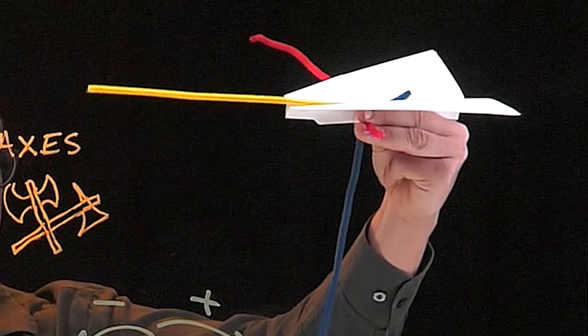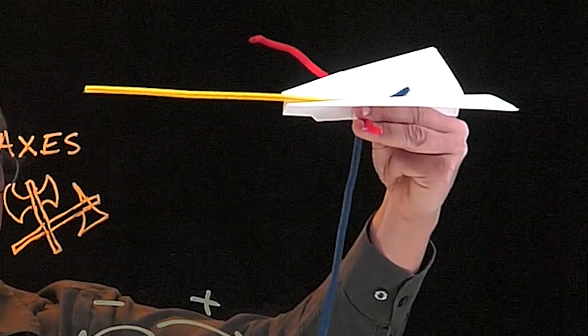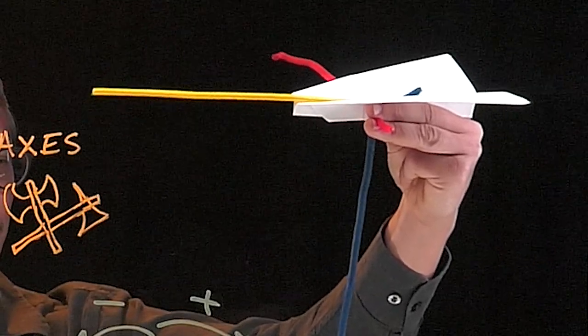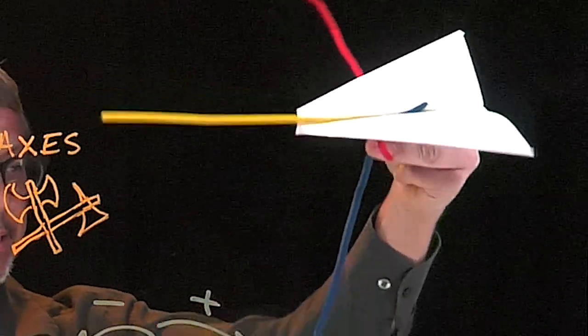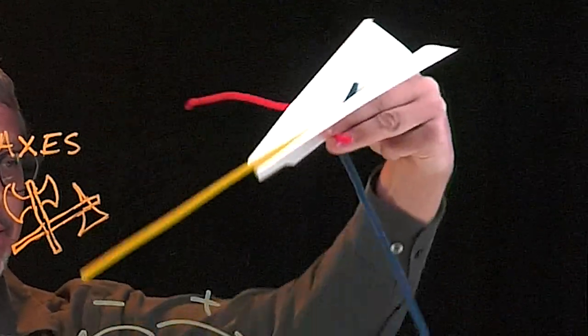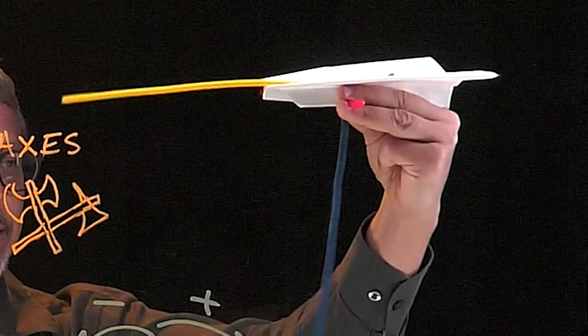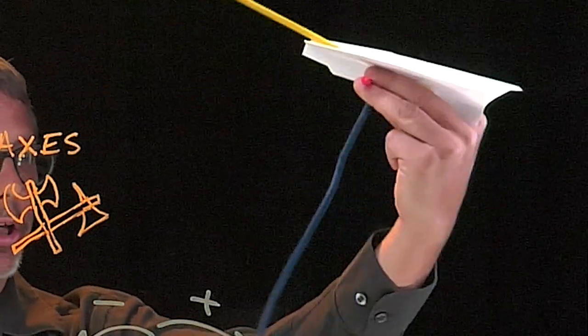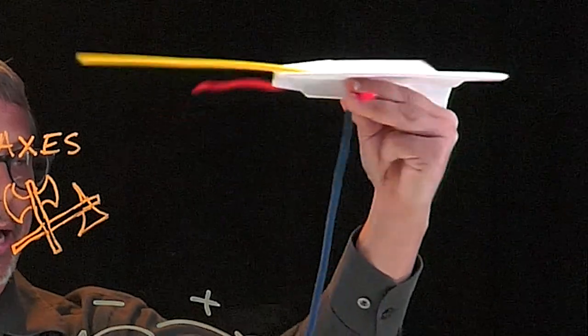Those three principal axes taken together help us to orient our airplane. Again, if we rotate around the longitudinal axis, this is our roll axis. If we rotate around the lateral axis, also known as our pitch axis, and if we rotate around the vertical axis, that's called our yaw, and we call that the yaw axis.